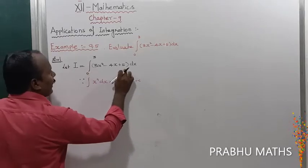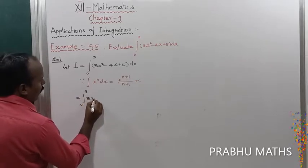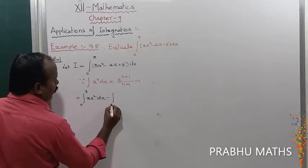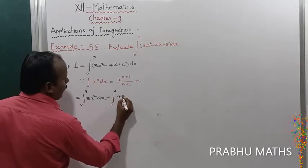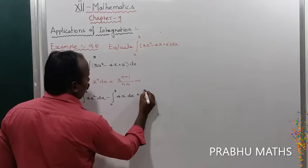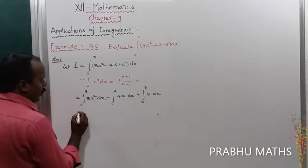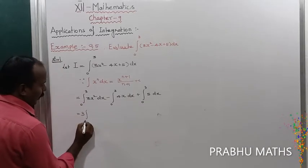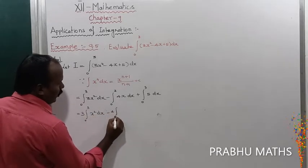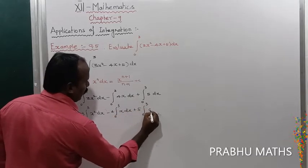By using this, we split the integration into three parts. That is equal to the integral from 0 to 3 of 3x² dx, minus the integral from 0 to 3 of 4x dx, plus the integral from 0 to 3 of 5 dx. The constant goes outside, so that is equal to 3 times the integral of x² dx, minus 4 times the integral of x dx, plus 5 times the integral of dx.